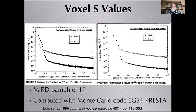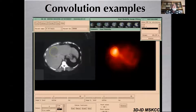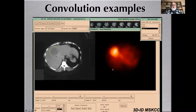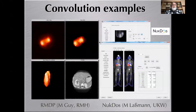Voxel S-values were introduced by resampling the absorbed dose point kernel into Cartesian geometry at the same spatial scale as the activity, as presented in MIRD Pamphlet 17 and computed with Monte Carlo code EGS4. This gave birth to a range of homemade codes for clinical dosimetry: 3DID proposed by Memorial Sloan Kettering in New York (with easy-lever references from around 1993), RMDP from the Royal Marsden by Matt Guy, and NUGDOS from Michael Lassmann and colleagues at the University of Würzburg in Germany. All these codes implement convolution.